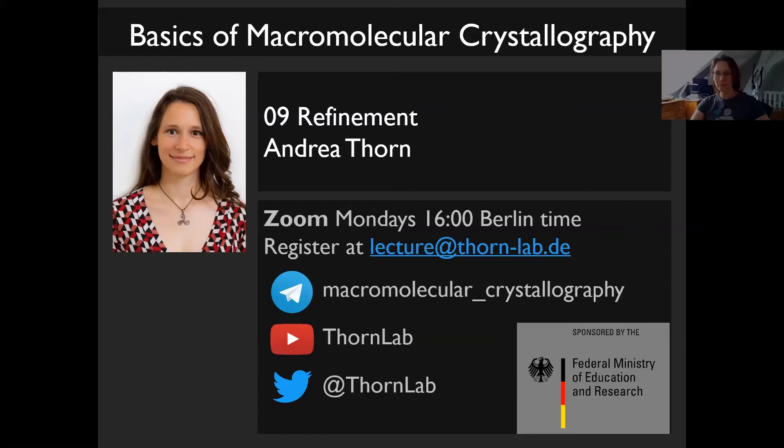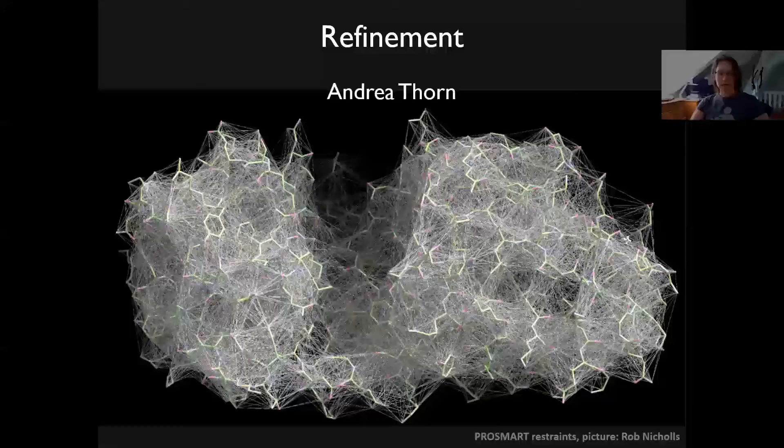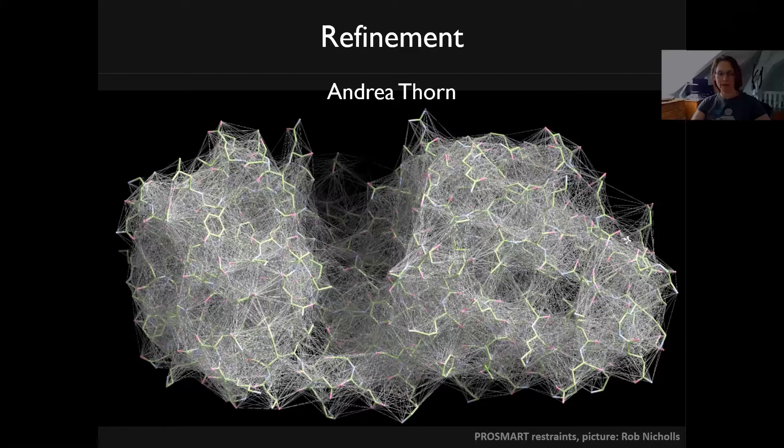This is a picture of restraints from ProSmart, which I will discuss at the end of this talk as an example of an advanced topic in low resolution refinement. Here you can see how every atom's movement is restrained by the other atoms, with the gray lines representing how the atoms are connected to each other.